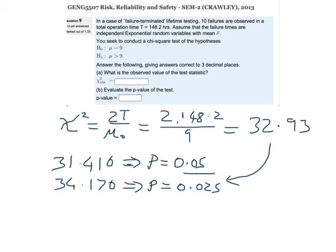Alright, so when I go and do a chi-square distribution right-tailed in Excel for 32.93 and 20 degrees of freedom, I get that the p-value is equal to 0.034.